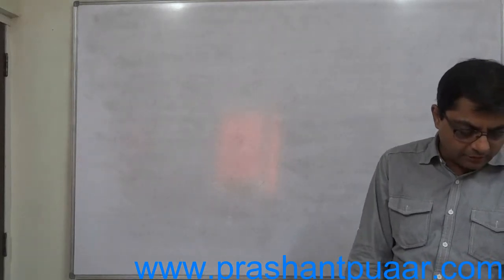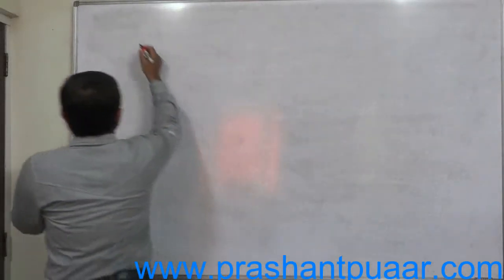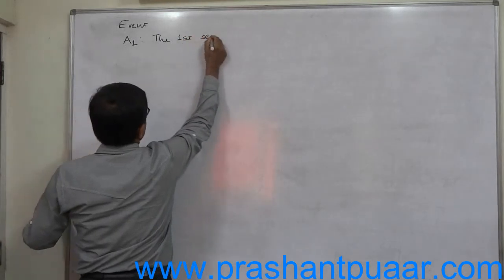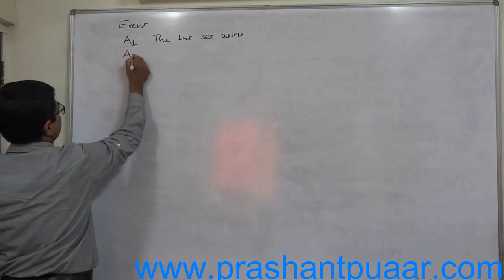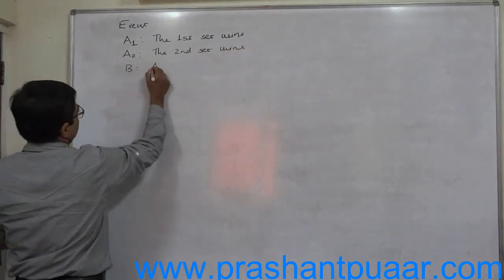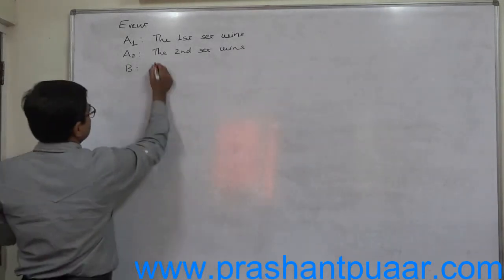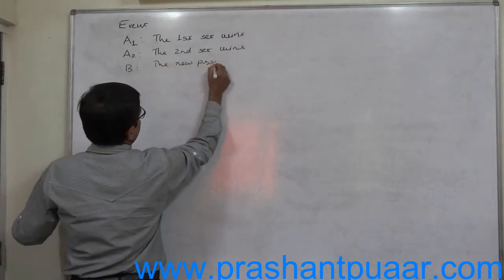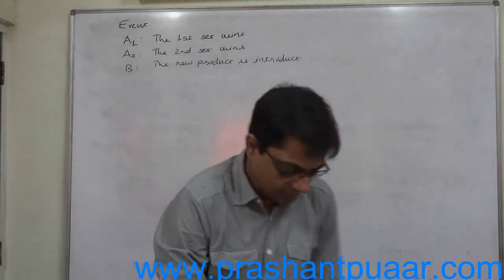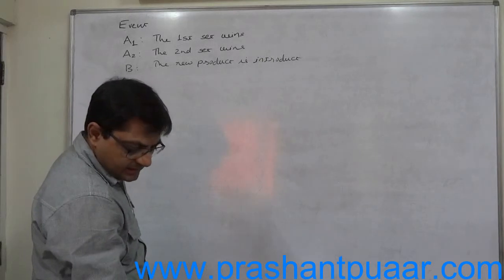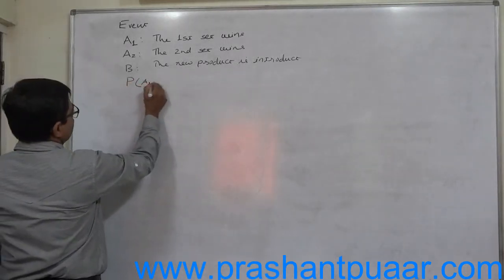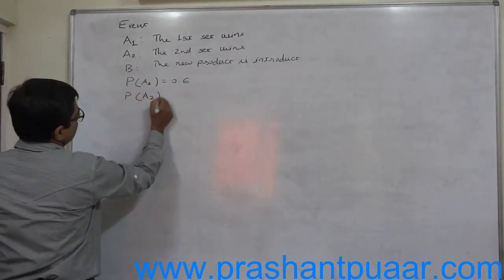We want to find the probability that the new product will be introduced. Let us define the events: A1 = first set wins, A2 = second set wins, and B = the new product is introduced. The available probabilities are: P(A1) = 0.6 and P(A2) = 0.4.